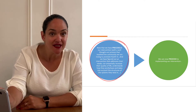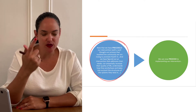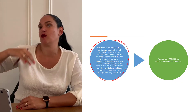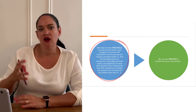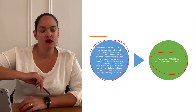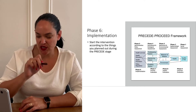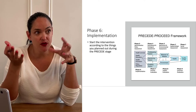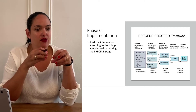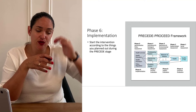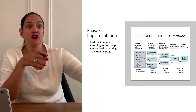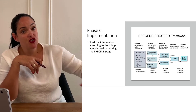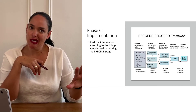That completes the PRECEDE phase. Before the intervention, we've talked to the community, figured out their problems and why they have them, identified the predisposing, reinforcing, and enabling factors, and assessed system-level factors. Now that we've consulted with our community and developed an intervention that helps them in the way they want to be helped, we move to PROCEED — phase six is actually running the intervention.